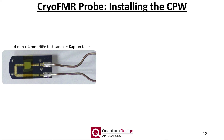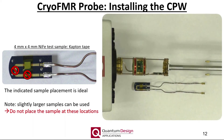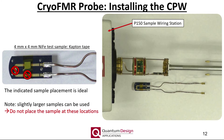Let us now mount a sample to the coplanar waveguide. We find the best method is to simply tape the sample to the coplanar waveguide using Kapton tape, as shown here for the included 4 mm by 4 mm permalloy test sample. The indicated placement is ideal, and slightly larger samples can of course be used. It is important to make sure not to cover these portions of the coplanar waveguide, however. This video will demonstrate installing the coplanar waveguide into the cryo-FMR probe. Note, it is incredibly useful to use the P150 sample wiring test station to hold the cryo-FMR probe in place, so that it does not roll around on your desk or work surface. Also, just for completeness, here is the location of the calibrated CERNOX thermometer.